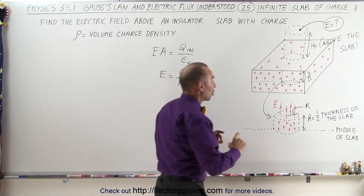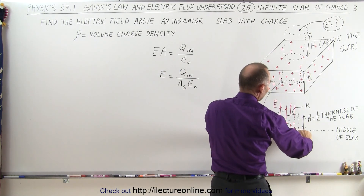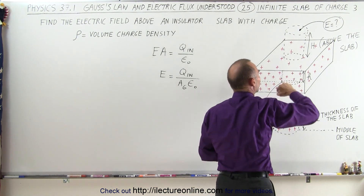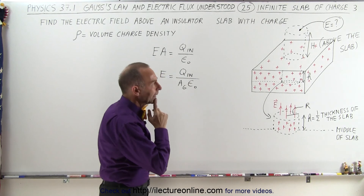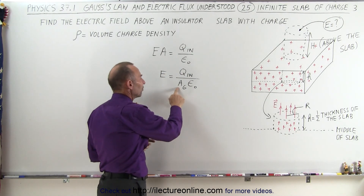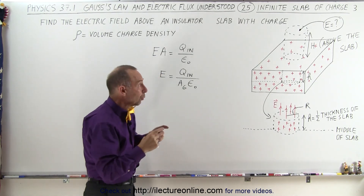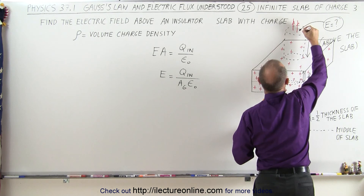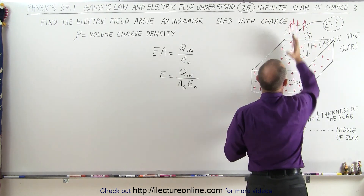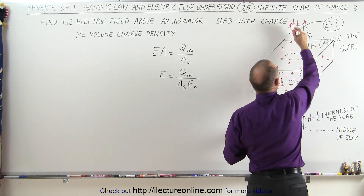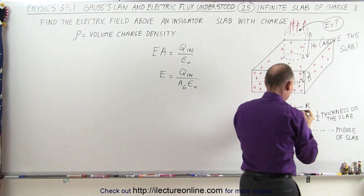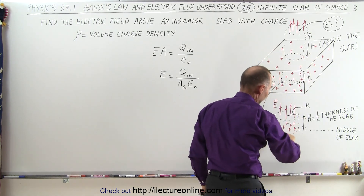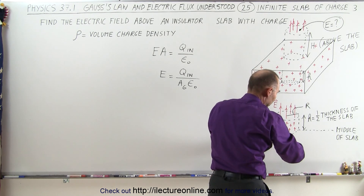The only portion containing charge is from the midway point to the very top of the slab. We have the entire Gaussian surface to deal with, but we only care about the portion where we have electric flux going through. Only the very top portion will have flux through it, as the field emanates from inside the slab upward. The sides will not have any electric field flux going through, and the bottom will also have no flux, because the electric field at the bottom is equal to zero.